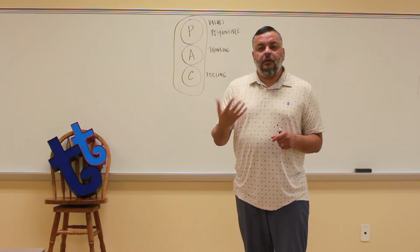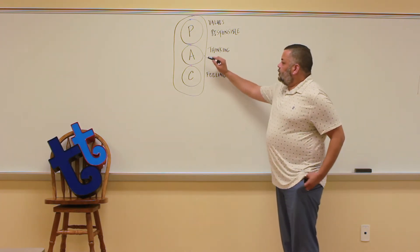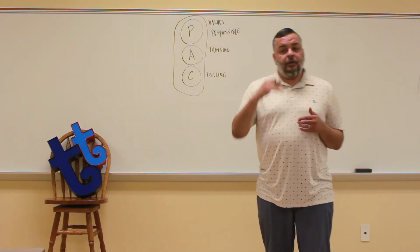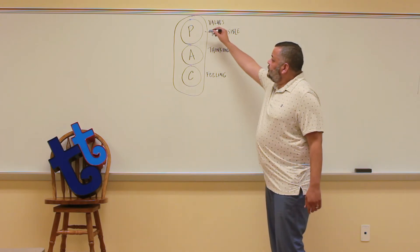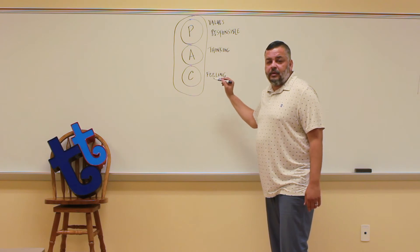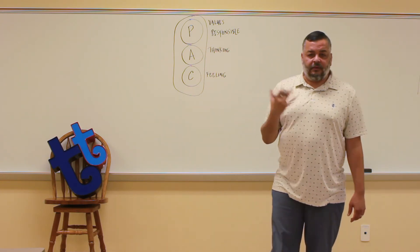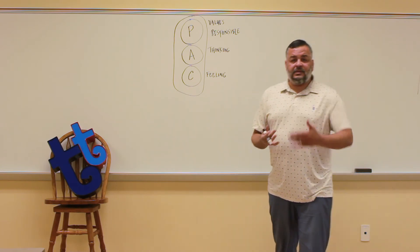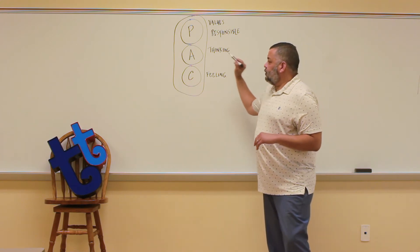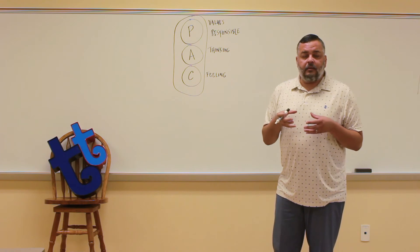With the adult ego state, this is what we call the executive secretary of the three. The parent ego state is an ego state of the past, and the child ego state is an ego state of the past. But our adult ego state is the executive secretary — it's an ego state of the present. It's constantly taking in present-day information.